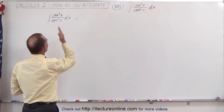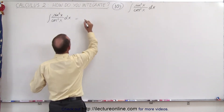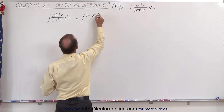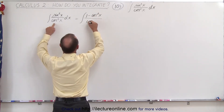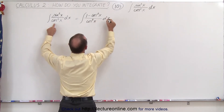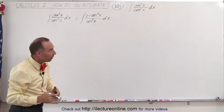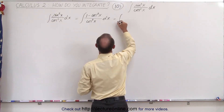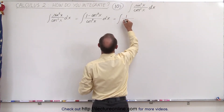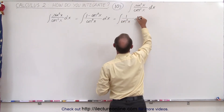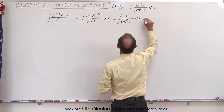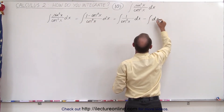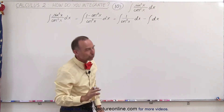Initially we do the very same thing. We're going to take the numerator and rewrite it as 1 minus the cosine square of x, and we still have the cosine square of x in the denominator, times dx. We're now going to write it as two separate integrals: the integral of 1 over the cosine square of x times dx, minus the integral of 1 times dx.